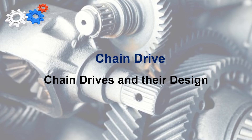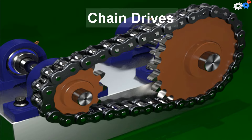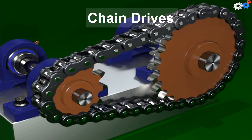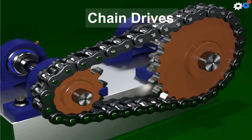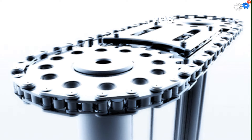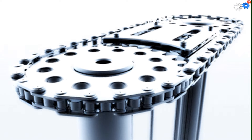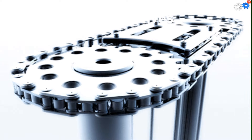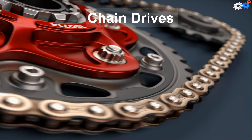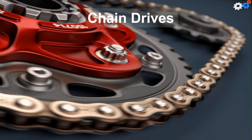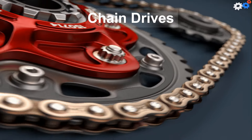Chain drives and their design. A chain is a power transmission element made of a series of pin-connected links. The design provides flexibility while enabling the chain to transmit large tensile forces. When transmitting power between rotating shafts, the chain engages mating toothed wheels called sprockets.